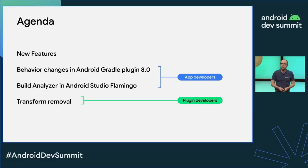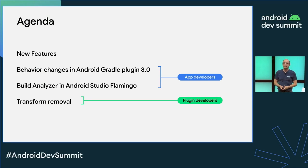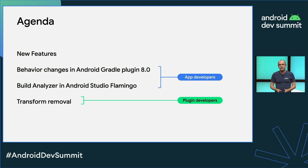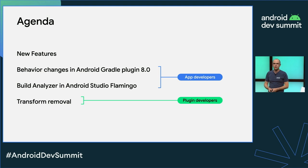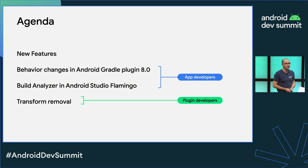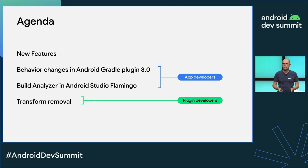The agenda covers new features we have, then Boris will talk about some of the behavior changes we introduced, then the Build Analyzer, and then I will come back to talk about a big API change — the Transform removal. This is something that if you are using, you must be aware that we are removing.